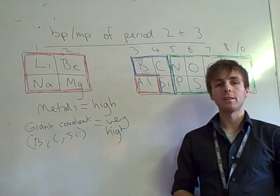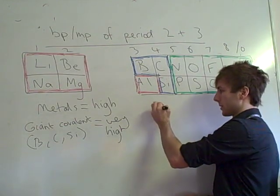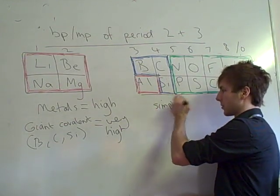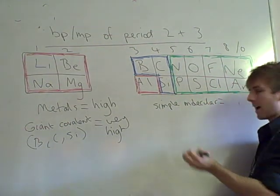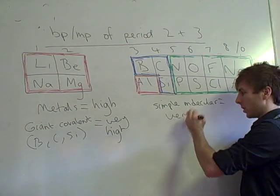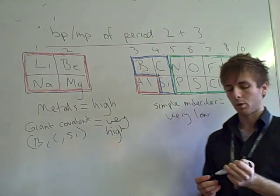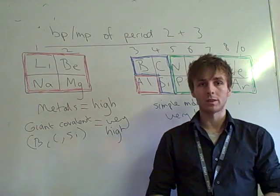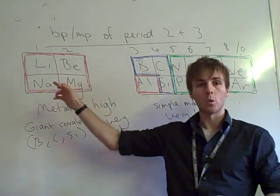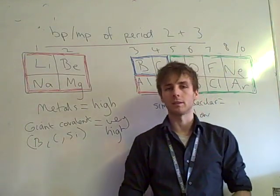Our elements in green, these are our simple covalent structures or simple molecular structures. And these have a very low boiling and melting point. These are all liquids or gases at room temperature, as opposed to these which are solids. That's how low the boiling and melting point is.